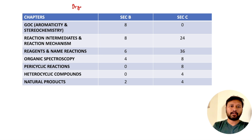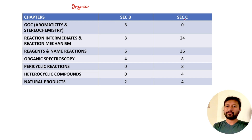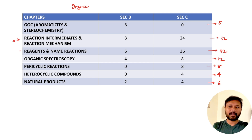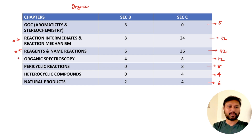For organic chemistry: GOC — which includes aromaticity and stereochemistry — was asked for only 8 marks in section C. Reaction intermediates and reaction mechanism combined were around 32 marks. Reagents and name reactions had the highest weightage at approximately 42 marks. Organic spectroscopy was 12 marks. Pericyclic reactions were 8 marks. Heterocyclic compounds were 4 marks. Natural products were 6 marks. The clear star topics are reaction intermediates and mechanisms, reagents and name reactions, and organic spectroscopy.